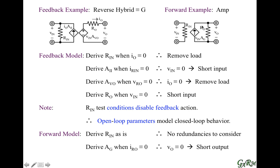When we derive the output resistance, we need to nullify the effects of the current source at the output. We look at the signal that controls it and make sure that is zero. So we go back to the input and short the input. This is a reverse short circuit test.